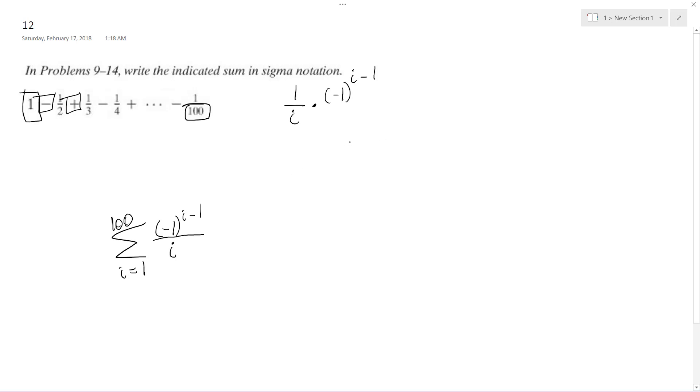Let's just test it out really quick. So we plug in 1, we get negative 1 raised to 1 minus 1, which is 0, over 1, which equals 1 over 1.